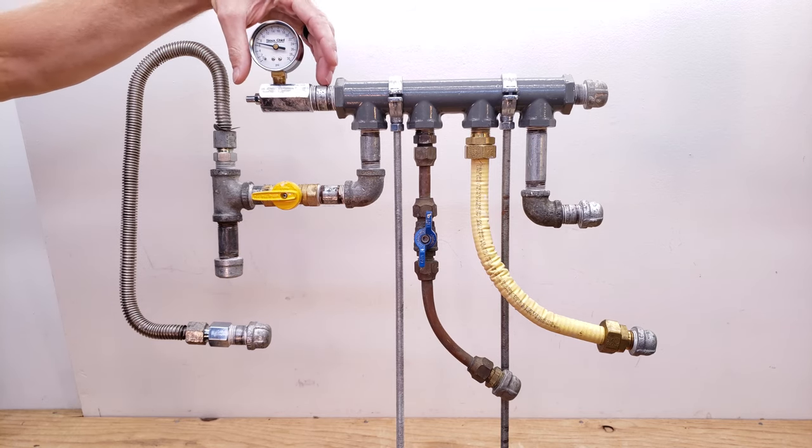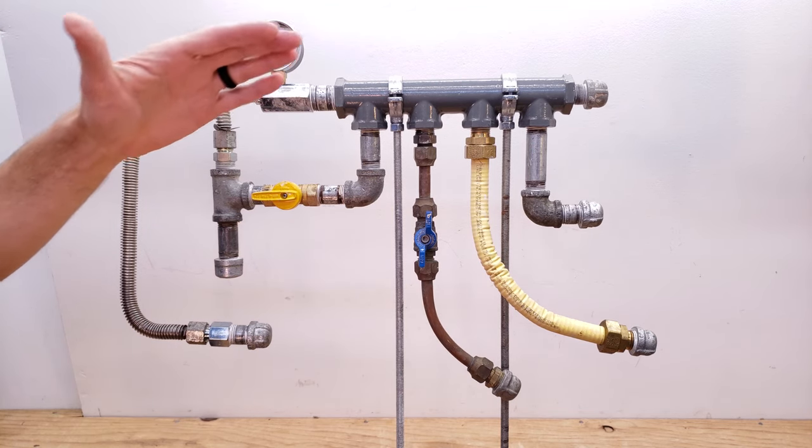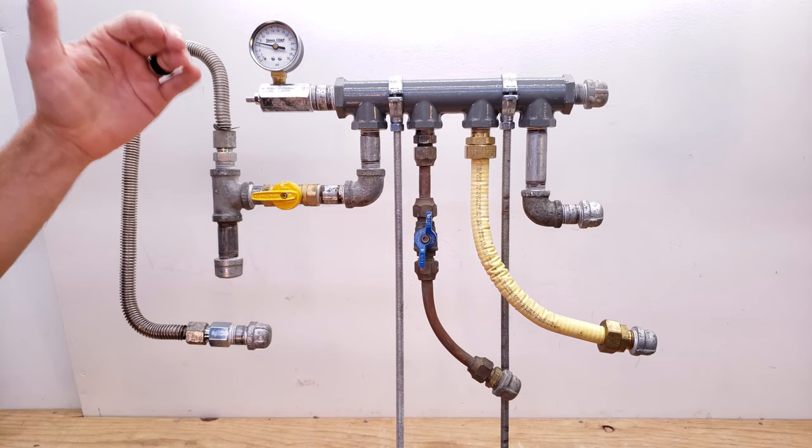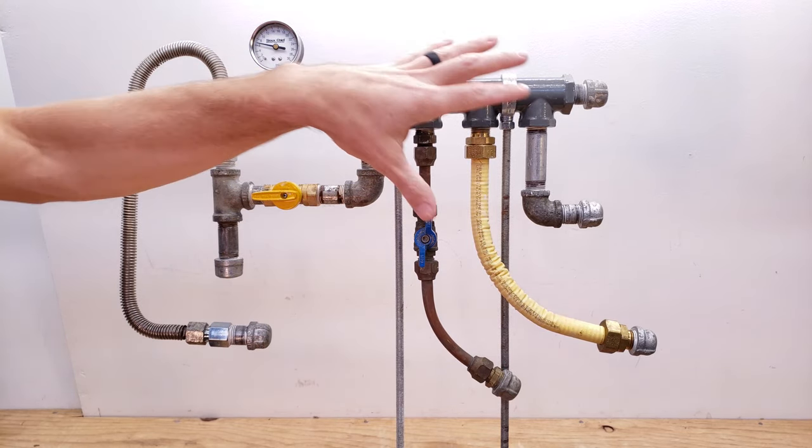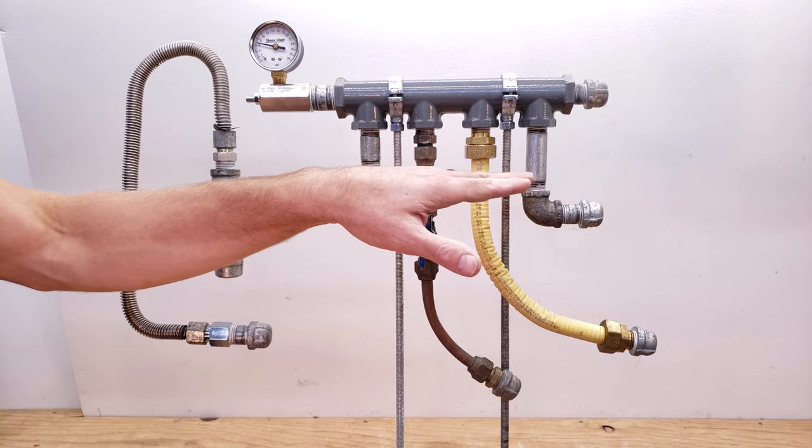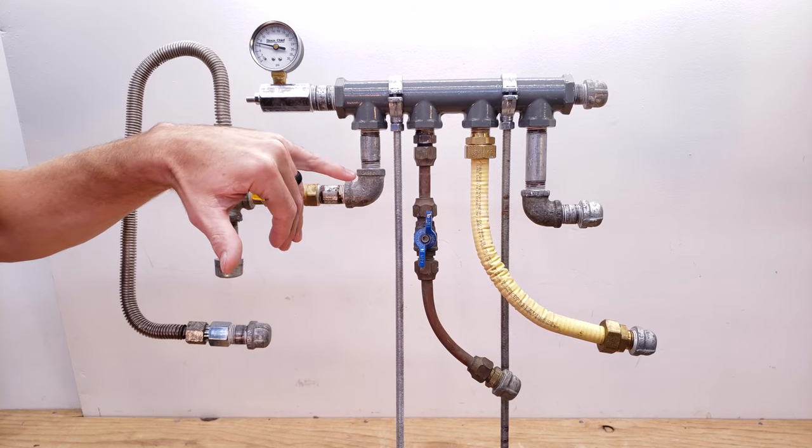So here we have a pressure test on our manifold. This is where our meter would end up getting mounted, but essentially I just built this little manifold to show you several different types of gas lines. And yes, this is galvanized gas pipe.